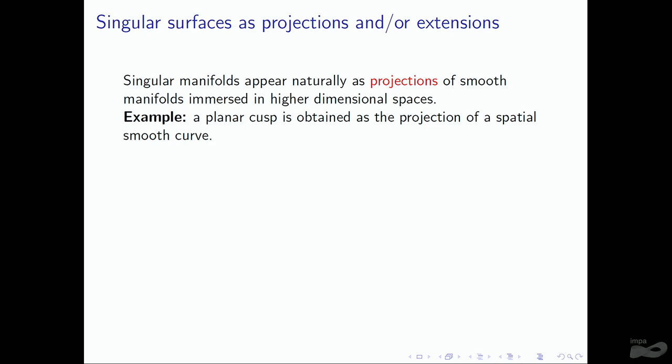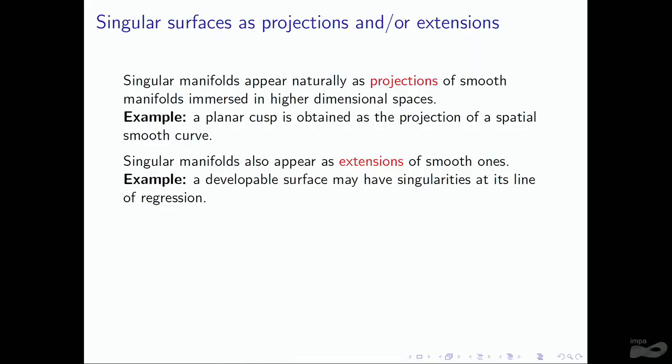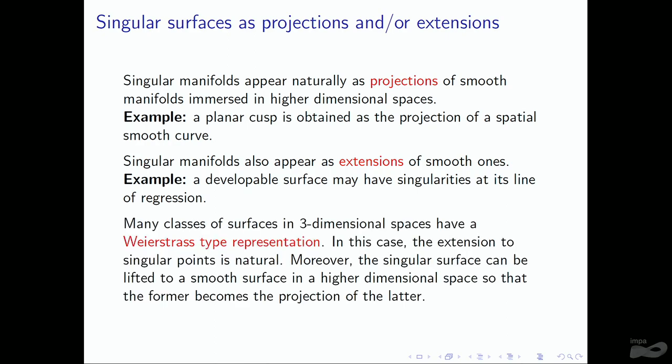Singular manifolds appear naturally as projections of smooth manifolds immersed in higher dimensional spaces. For example, a planar cusp is obtained as the projection of a spatial smooth curve. Singular manifolds also appear as extensions of smooth surfaces. For example, a developable surface may have singularities at its line of regression. Many classes of surfaces in three-dimensional spaces have a Weierstrass-type representation, and in this case, the extension to singular points is natural.